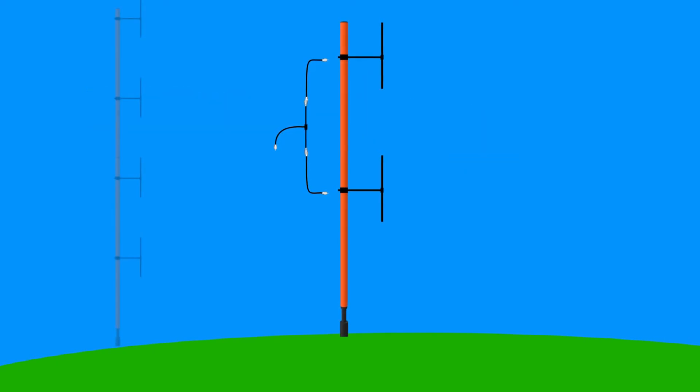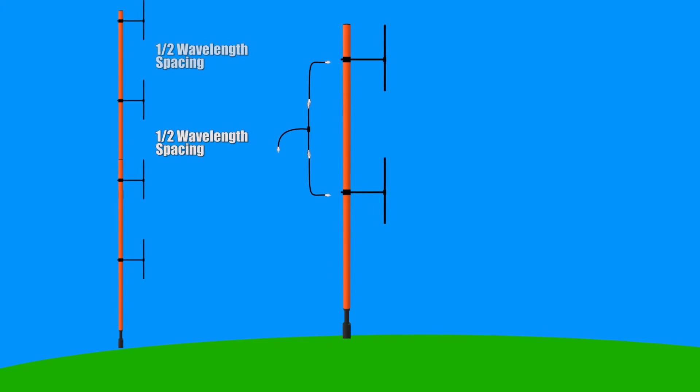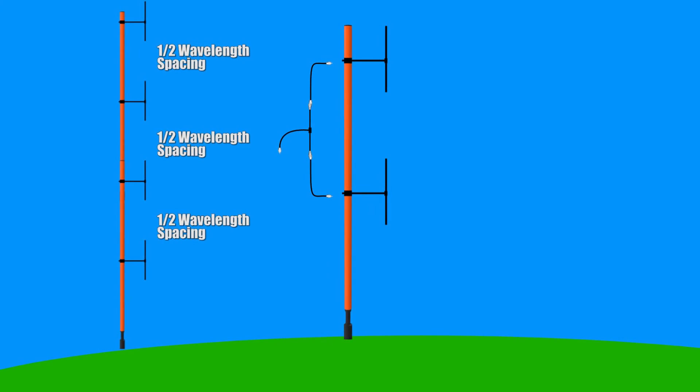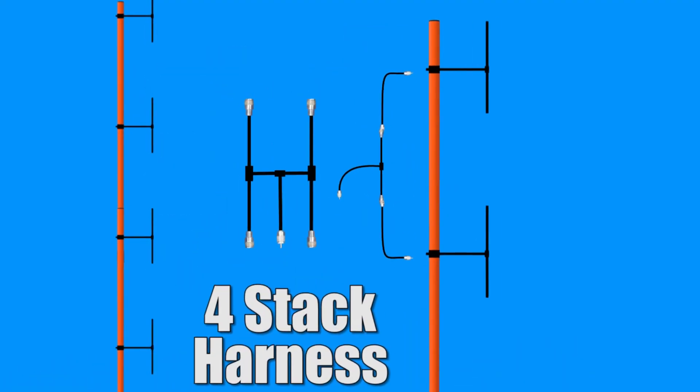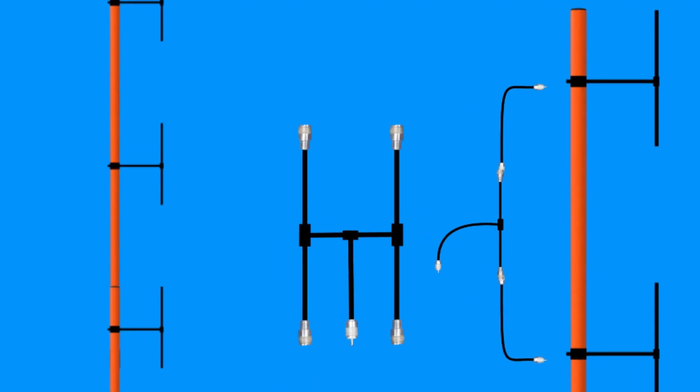For the four-stack array, the spacing is the same with half a wavelength between each dipole. The main difference is the harness length. The harness is slightly different as each pair of arms of the harness is separated by another section of about an eighth of a wavelength so that the length between the two pairs is about a quarter of a wavelength.